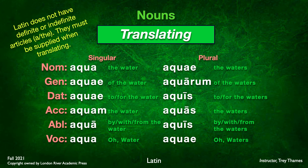For plural forms of aqua, it's the same translations but plural: 'the waters,' 'of the waters,' 'to or for the waters,' 'the waters,' 'by, with, or from the waters,' and 'O, waters!' A quick note: Latin does not have a definite or indefinite article — the words 'a' or 'the.' Unlike Greek, Latin does not have them, so you must supply them when you translate.